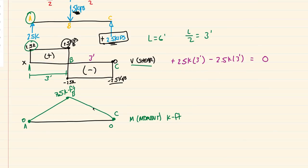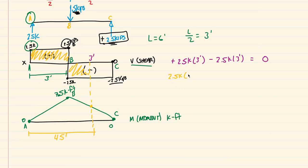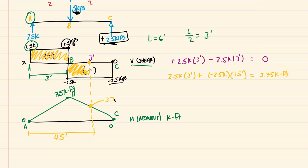If we want any intermediate value on the moment diagram — say halfway between B and C at a total distance of 4.5 feet from A — we take the area under the shear diagram up to that point. From A to B that's 2.5 kips × 3 feet, plus the negative area from B to the midpoint: negative 2.5 kips × 1.5 feet. That totals 3.75 kip-feet. So the moment diagram value at 4.5 feet is 3.75 kip-feet.